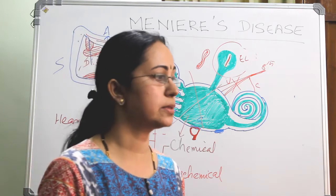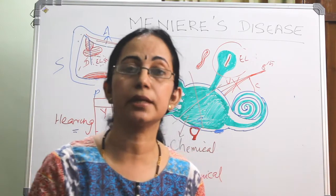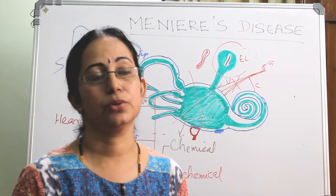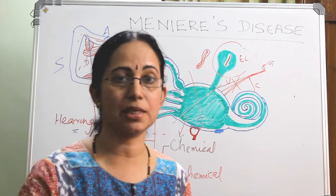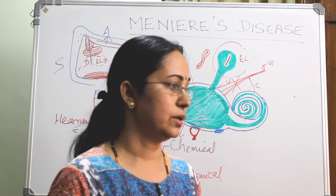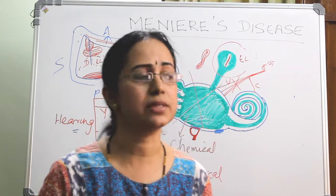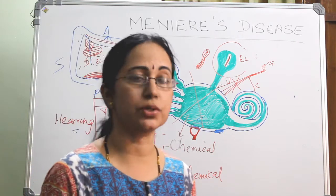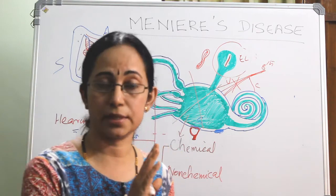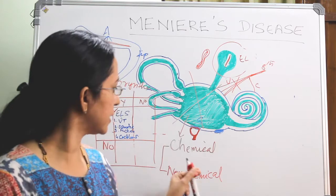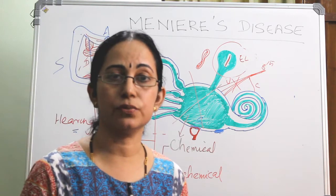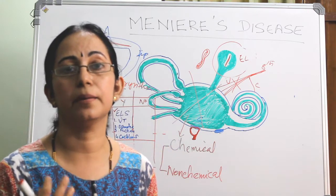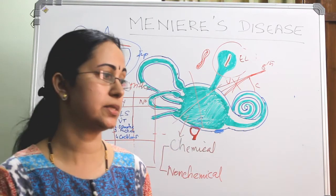Chemical ablation uses intratympanic injection of aminoglycoside, mainly gentamicin. Gentamicin is introduced intratympanically. It is a very simple procedure — little or no downtime, no need for hospitalization. That is the preferred method. However, multiple sittings are needed and follow-up is a must for the patient.